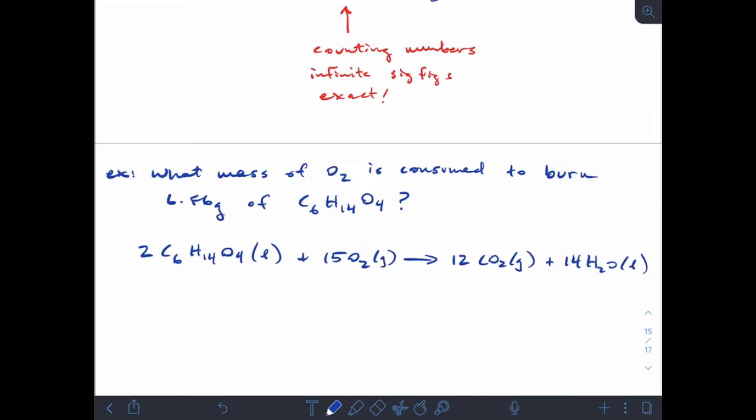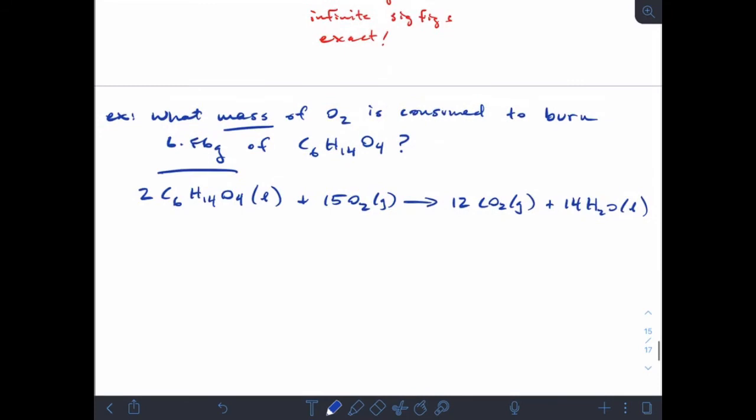So right now we are at grams and we're asked for a mass of O2. But we still have to cross the mole bridge. So now we have a path to get to the mole bridge. We're not standing at the foot of the mole bridge like we did in the previous example. Now we have to go to the bridge. And so we need to get to moles. So our given information is the 6.86 grams of C6H14O4.